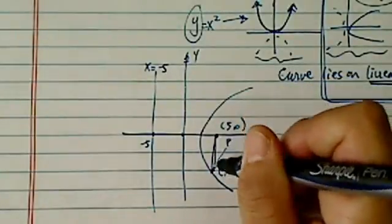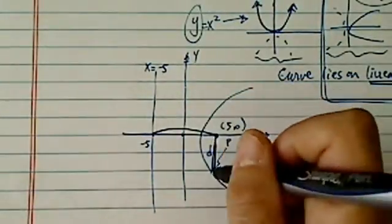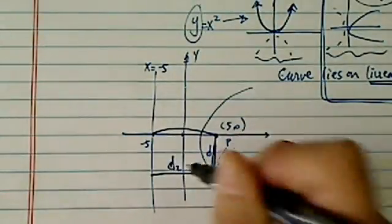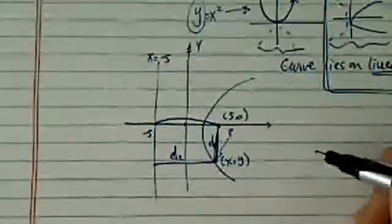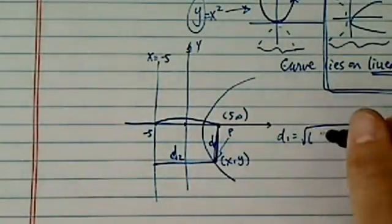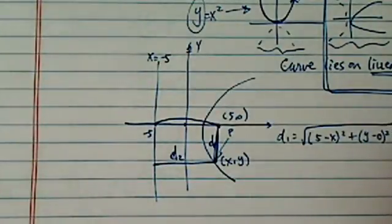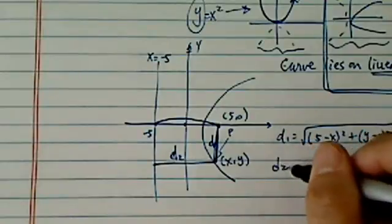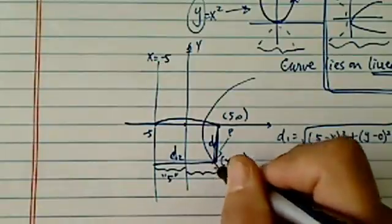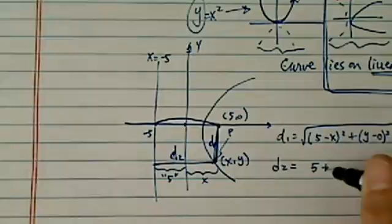The distance to this point, let's call it d1, is the same as distance from here, from the curve, d2. Okay, so d1 is equal to d2. d1, using the distance formula, it's the difference between x, which is (x-5) squared plus (y-0) squared. d2, this one is 5 units, and this one is x units, so d2 is equal to (5+x).